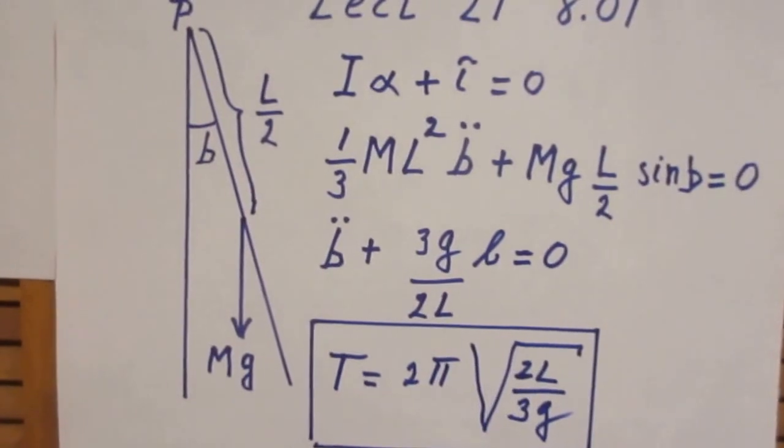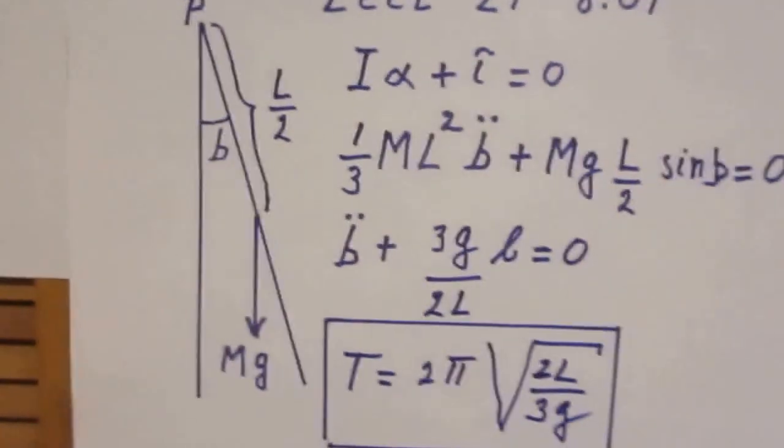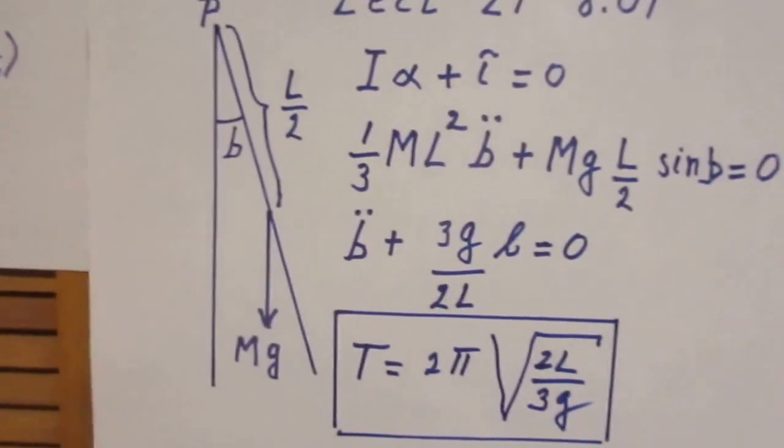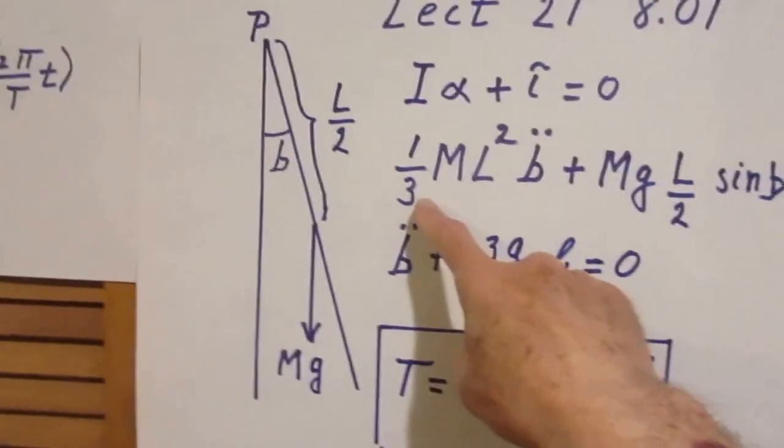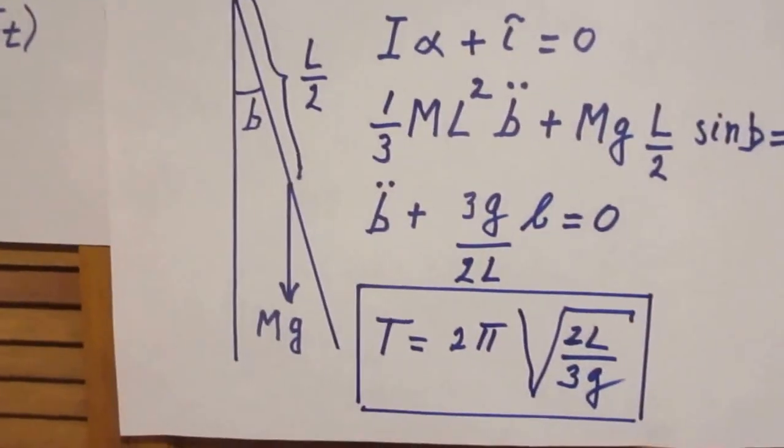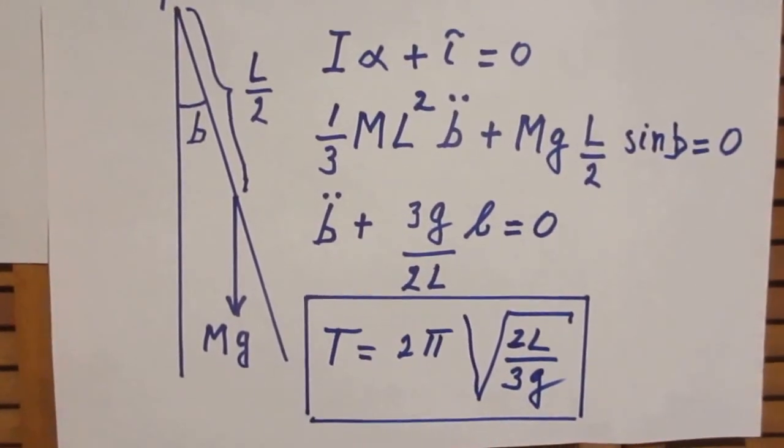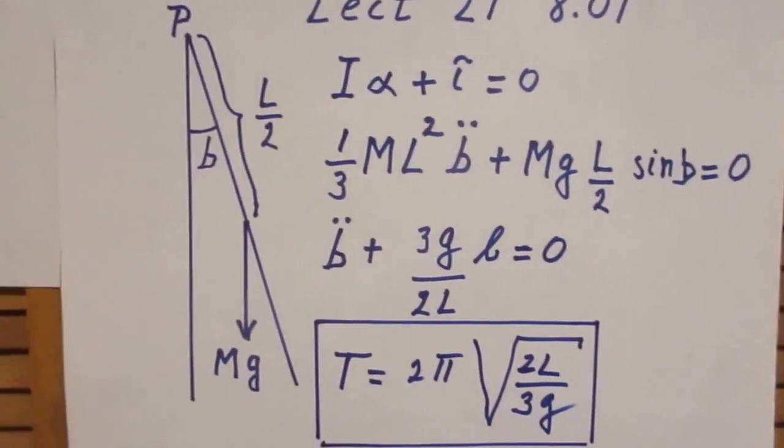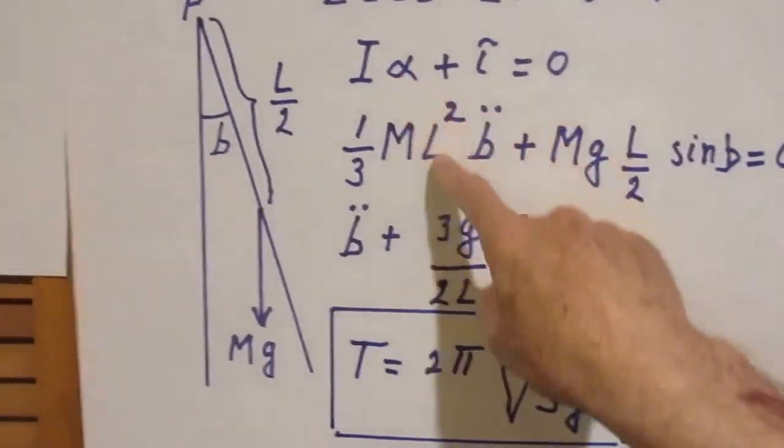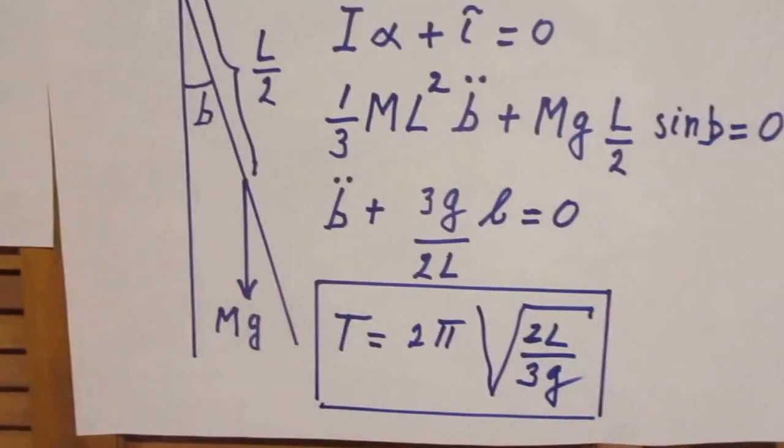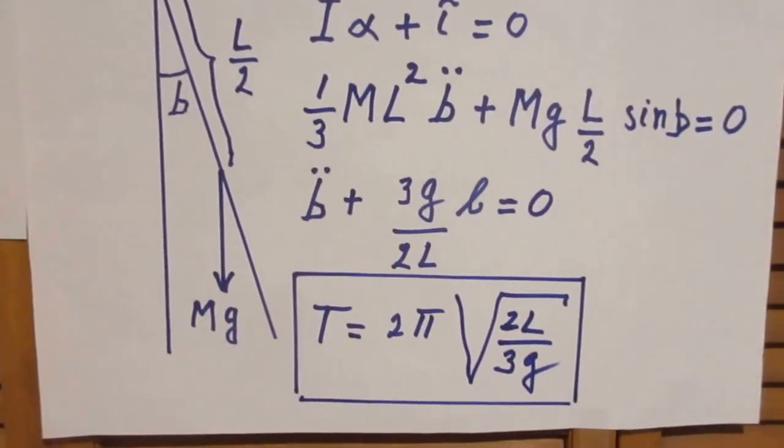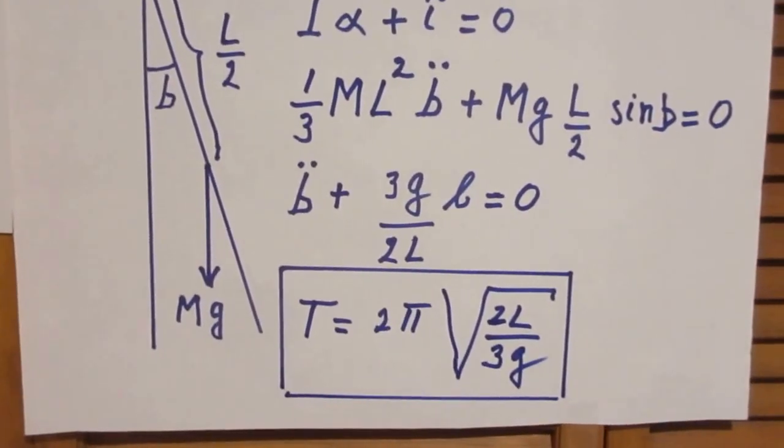It is a restoring torque, that's why we have a plus sign here. So the moment of inertia for oscillations about P of this rod is one-third ML squared. You can look that up anywhere on the web, you can also derive it for yourself. And then the second derivative of the angle in our case would therefore become B double dot. The double dot indicates second derivative in time.